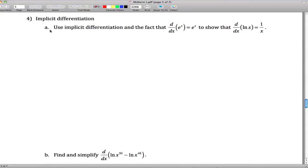All right, number four on the white test. You've got to use implicit differentiation and the fact that the derivative of e to the x is e to the x to show that the derivative of natural log of x is 1 over x.